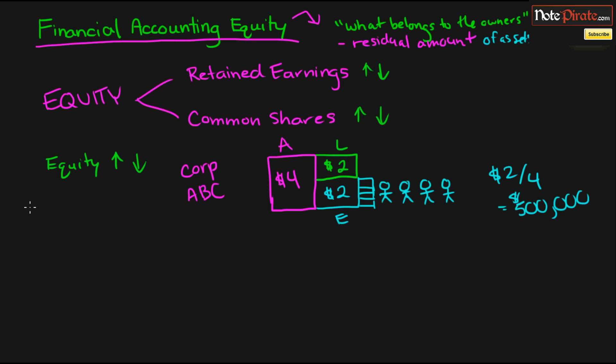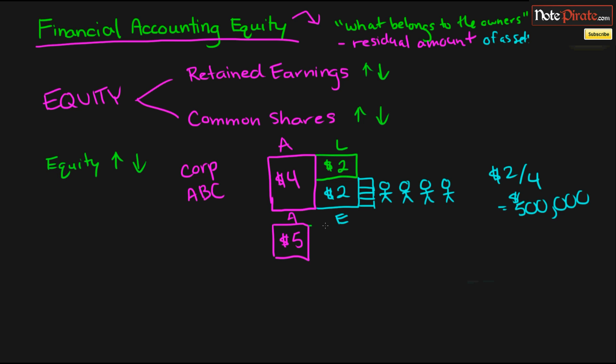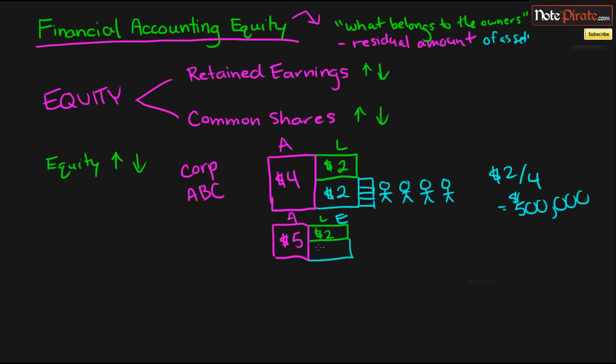Now let's run a scenario. Let's say that assets increase to $5 million, and we will say that liabilities stay the same at $2 million. And our equity, since it is the residual amount, is going to be $3 million.